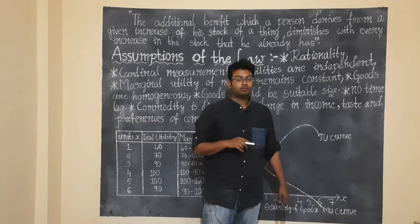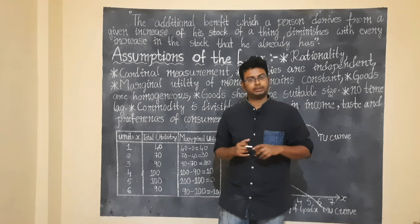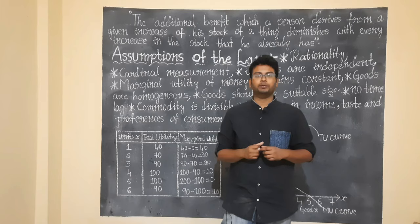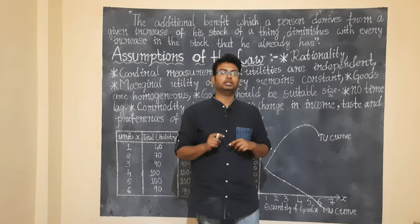Next assumption: goods are homogeneous. The first apple should be a delicious, fresh apple. The second apple should be the same quality. If the first apple is good but the second apple is very delicious, you might prefer the second over the first — that would reverse the outcome. So goods should be homogeneous — all units must be of the same quality.